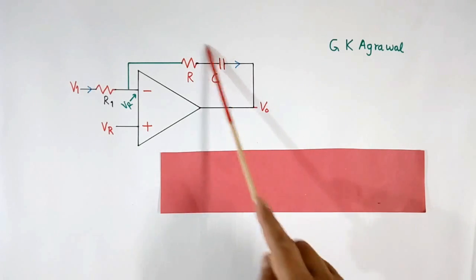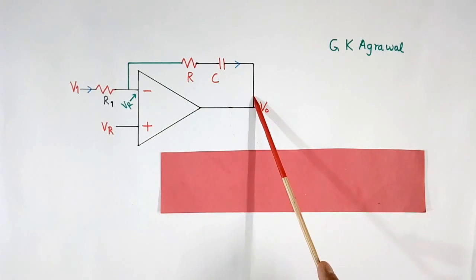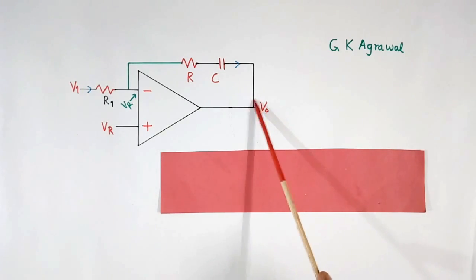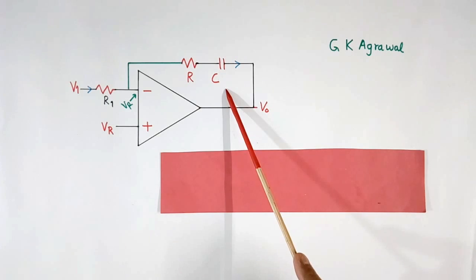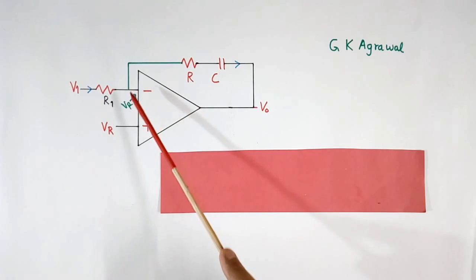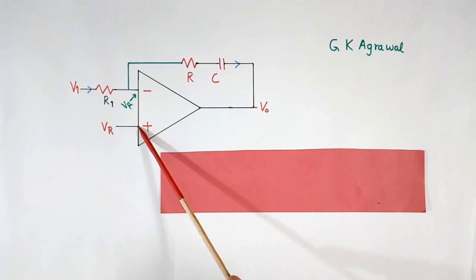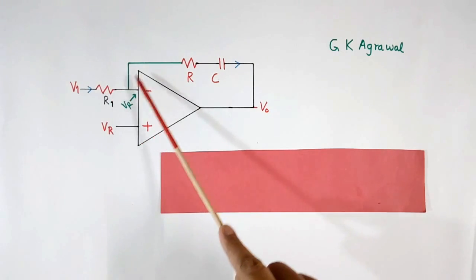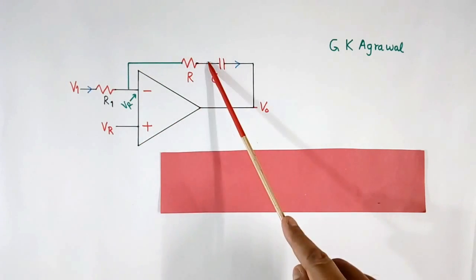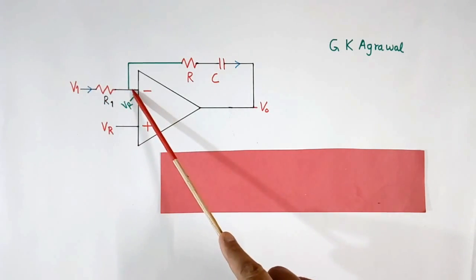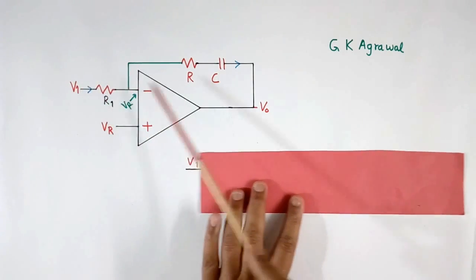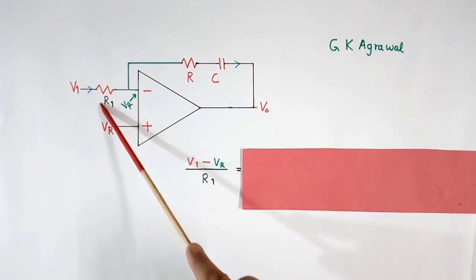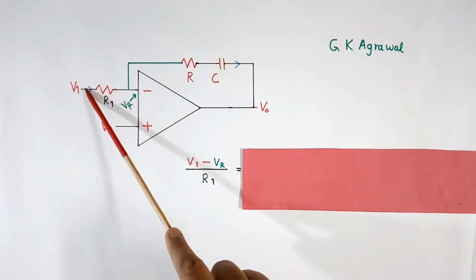Now we will find the equation of the third circuit using those two rules. In this third circuit, I have added one capacitor in the feedback path. According to the first rule, the voltage at the negative terminal will be equal to the positive input voltage Vr. Now for the second rule, we will calculate the current through input resistor R1, which equals V1 minus Vr, divided by R1.